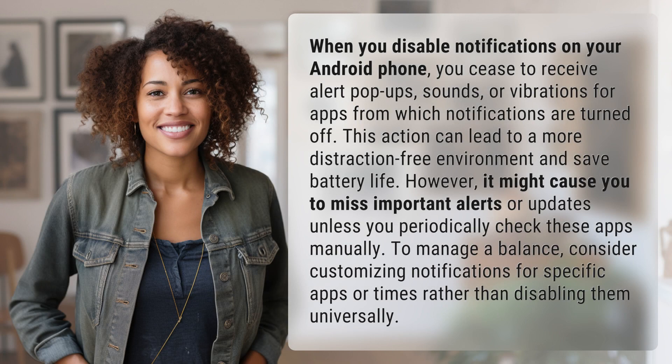When you disable notifications on your Android phone, you cease to receive alert pop-ups, sounds, or vibrations for apps from which notifications are turned off. This action can lead to a more distraction-free environment and save battery life.